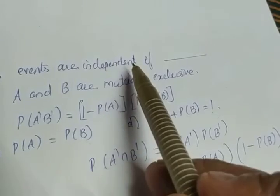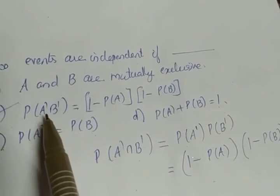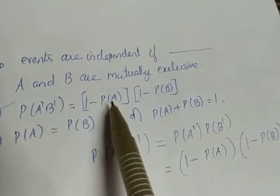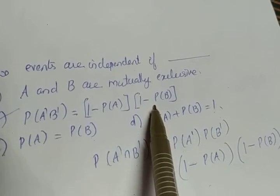So if two events are independent, what's the conclusion? P(A' ∩ B') is equal to [1 - P(A)] × [1 - P(B)].